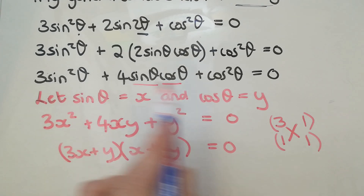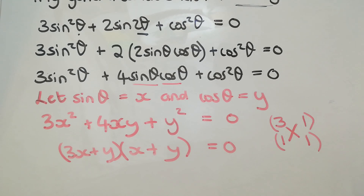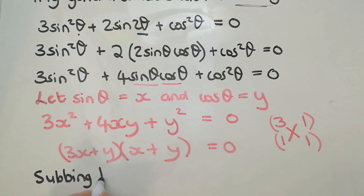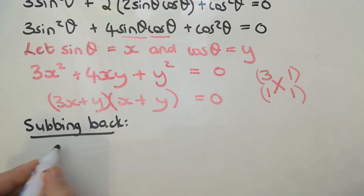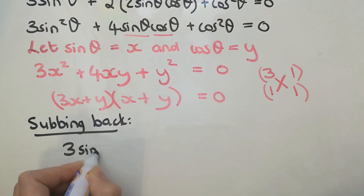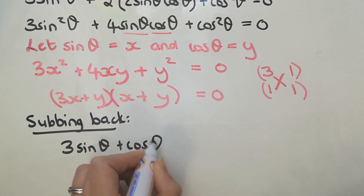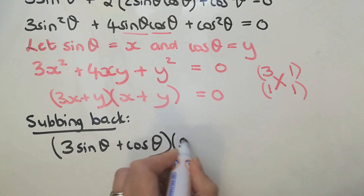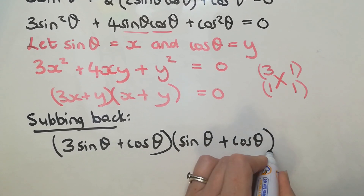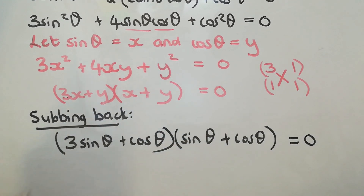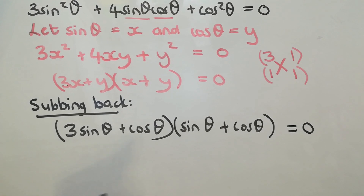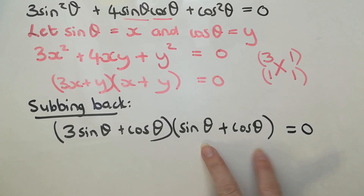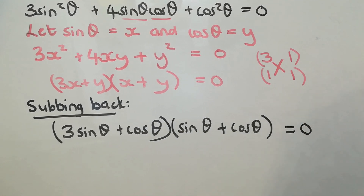At this point I'm not going to solve — I'm going to go back and substitute in what I originally changed. Where I've got an x I'm going to put sine theta, and where I've got a y I'm going to put cos theta. Subbing back, we get (3 sin θ + cos θ)(sin θ + cos θ) = 0. Now it looks like a grade 11 one where I just need to let each factor equal zero — two answers for each, though some might be invalid.